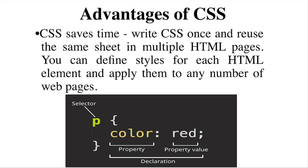In CSS, 'p { color: red; }' — here p is the selector, color is the property, and red is the property value. This is a declaration. The second advantage is that pages load faster. Using CSS eliminates the need to write HTML tag attributes every time. Just create a CSS rule for the tag and apply it to all occurrences. Less code means faster download times.